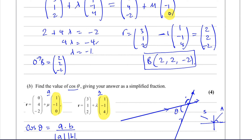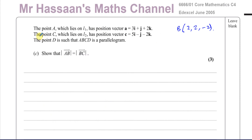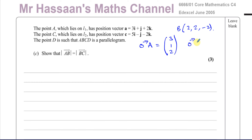Part C: Point A lies on L1 with position vector OA = (3, 1, 2). Point C lies on L2 with position vector OC = (5, −1, −2). Point D is such that ABCD is a parallelogram. We already know OB = (2, 2, −2) from Part A.